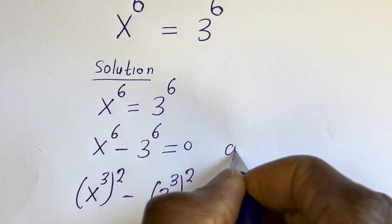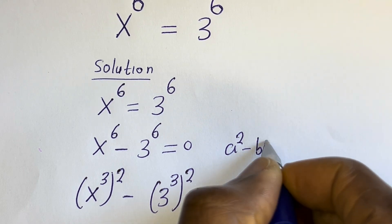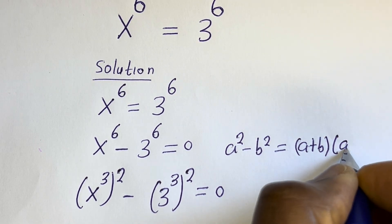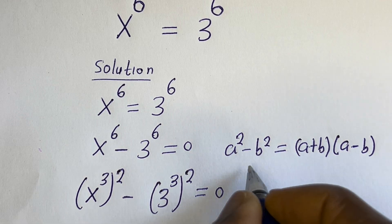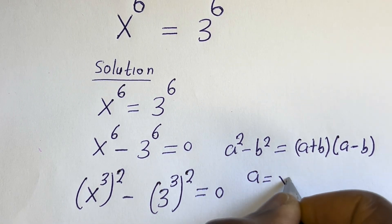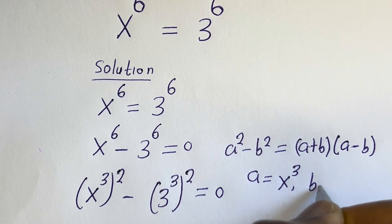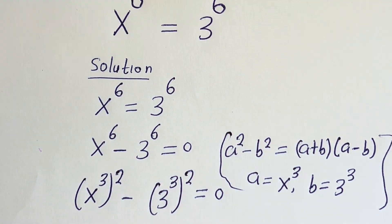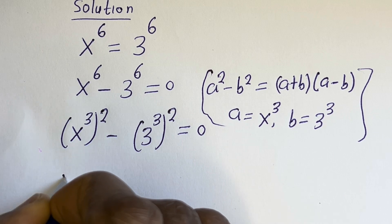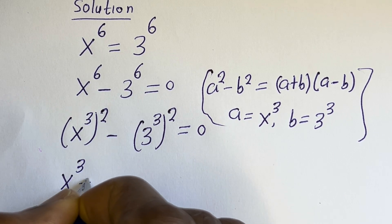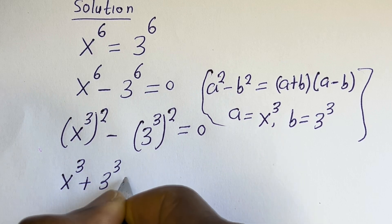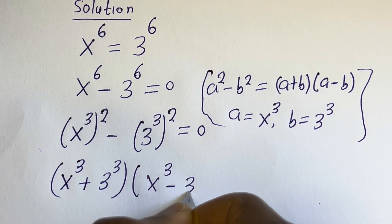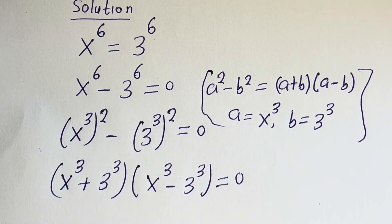That is, if you have a squared minus b squared, this is equal to (a plus b)(a minus b), where a is equal to x to the power of 3 and b is equal to 3 to the power of 3. Then this can be written as (x³ + 3³)(x³ - 3³) is equal to 0.